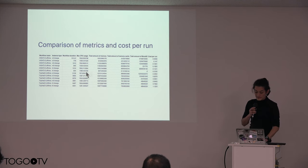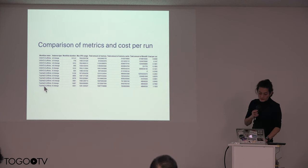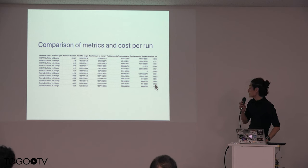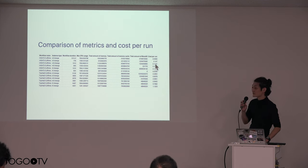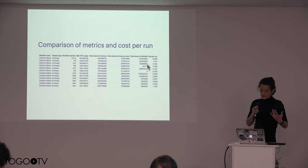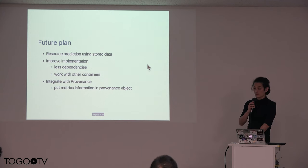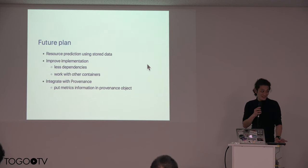This kind of analysis with CWL metrics can tell you about the cost of running workloads. This table compares the HiSat2 Cufflinks and TopHat2 Cufflinks workloads and shows you how to calculate the cost per workload run. You can clearly see the difference — TopHat2 is more expensive than HiSat2 because it is slower. You can do this kind of comparison analysis by packaging your workload in CWL.